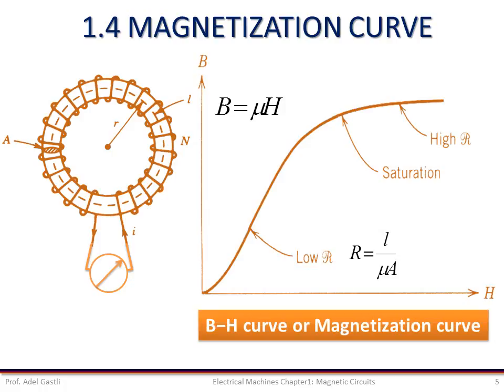So the magnetic circuit differs from the electric circuit in this respect. Resistance is normally independent of current in the electric circuit, whereas reluctance depends on the flux density in the magnetic circuit. So the reluctance of the magnetic path is dependent on the flux density. It is low when B is low and high when B is high.